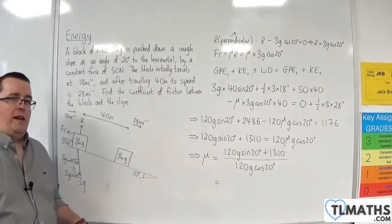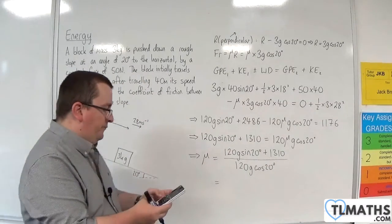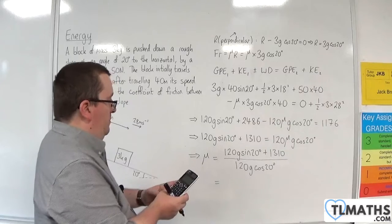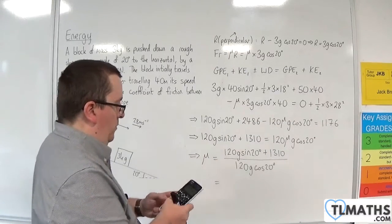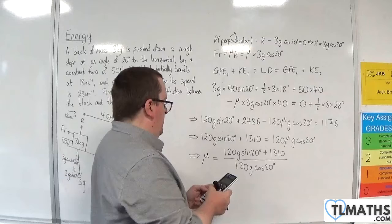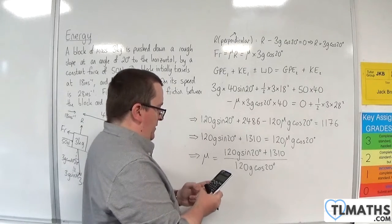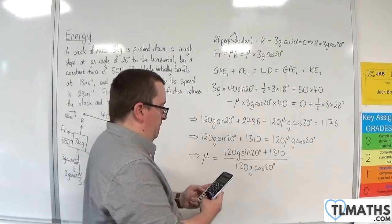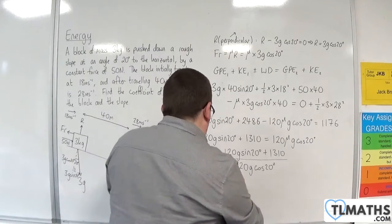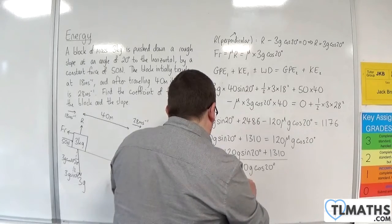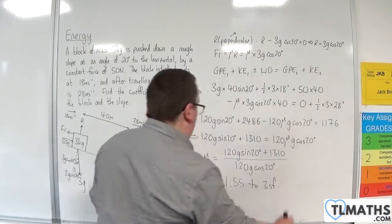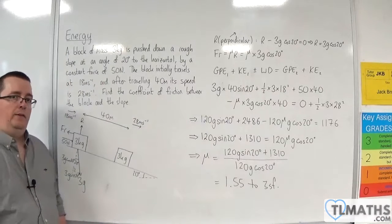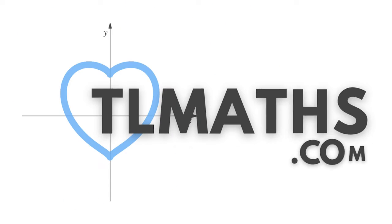Now I'm going to plug in the G as 9.8. So 120 times 9.8 times sine 20 plus 1,310 over 120 times 9.8 times cosine 20. And we get 1.55 to 3 significant figures.